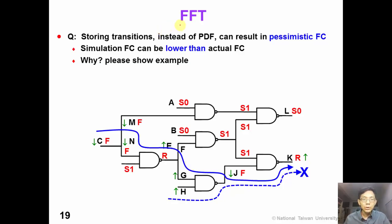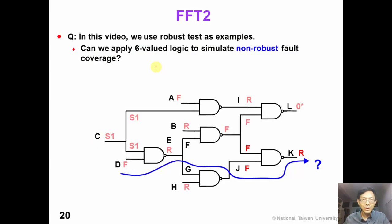Now it's time for you to work on the further thinking questions. The first question: we propose to store the transitions instead of the path-delay faults. We mentioned that this technique can result in pessimistic fault coverage, meaning the simulated fault coverage can be lower than the actual fault coverage. So what is the reason? Please show an example. Question number 2: in this video we use robust test as an example. Can we apply the six-value logic to simulate non-robust fault coverage? For example, in this circuit, this AND gate is non-robustly sensitized. Can we use the six-value logic to force simulate this path-delay fault and decide it is non-robustly detected? Thank you for watching.